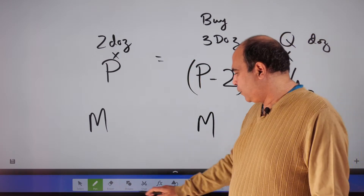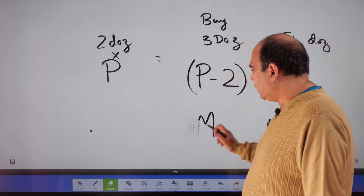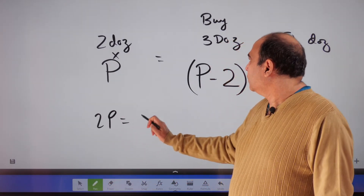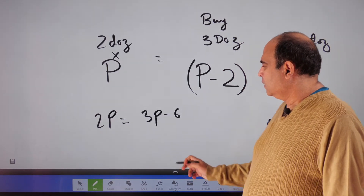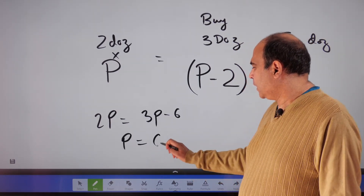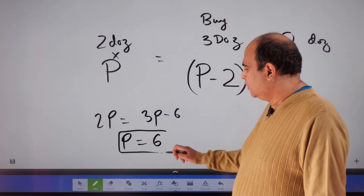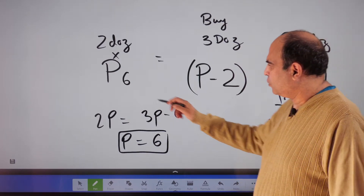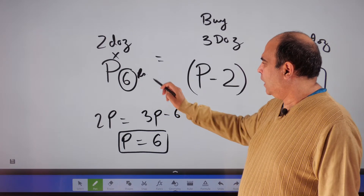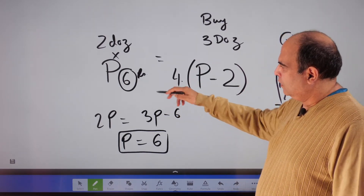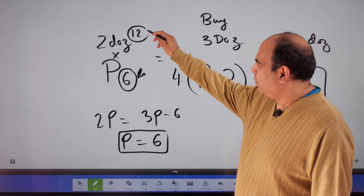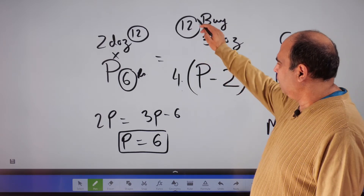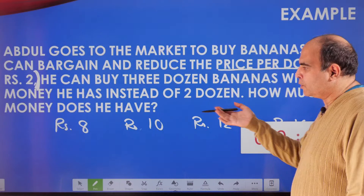So 2p = 3p − 6, which gives p = 6 rupees per dozen. The original price per dozen was 6 rupees, and p minus 2 becomes 4 rupees per dozen. Two dozen at 6 rupees gives 12 rupees total money; three dozen at 4 rupees also gives 12 rupees. The question asks how much money does he have — the answer is 12 rupees.